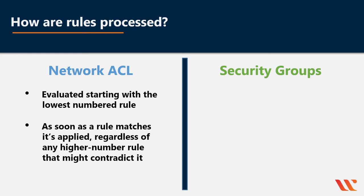For example, say you had rule 100 for port 80, which allows traffic from any address, and rule 110 which allows port 443 from any address. You also always have a star rule deny at the end, which you are not allowed to modify. If a packet comes in destined for port 443, it doesn't match rule 100, but it does match rule 110, which allows that packet into the subnet.